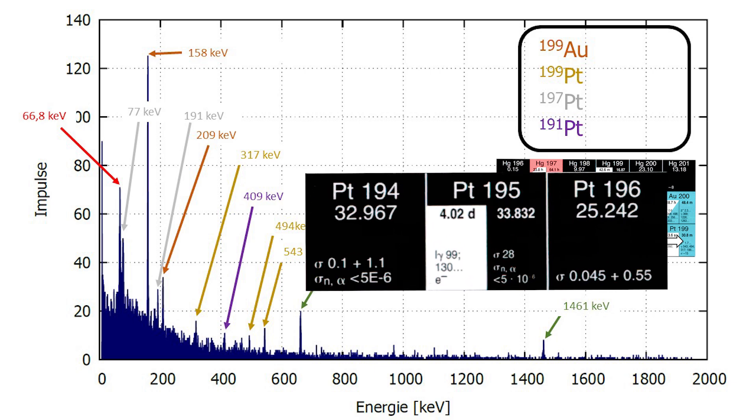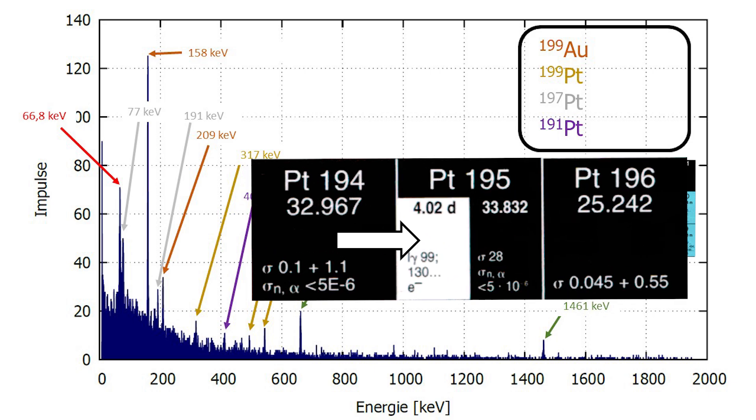If platinum 194 captures a neutron, radioactive platinum 195M may be produced. This makes an isomeric transition by emitting gamma photons. Unfortunately, it was not possible to recognize these transitions in the spectrum, even if, according to the occurrence probability of 11.1%, it should be sufficient. I don't know what happened there.